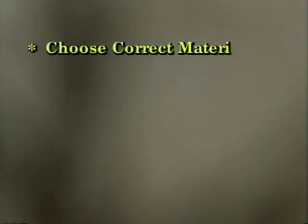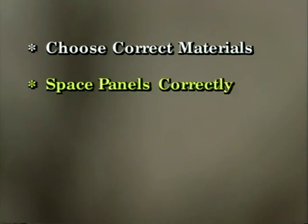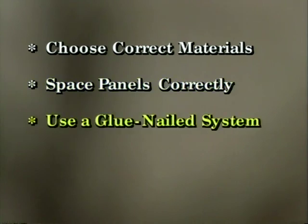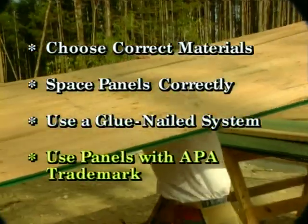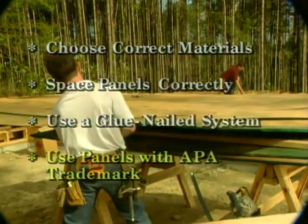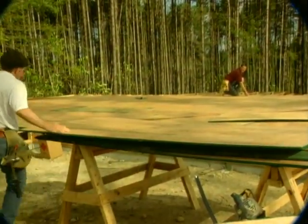In this program we'll show you four simple ways to avoid complaints and callbacks brought on by floor noises. First, always choose the proper building materials. Space floor panels correctly, making sure to leave room for expansion. APA strongly recommends you install a glued floor system with panels nailed and glued to the floor framing, and with all tongue and groove panel edges glued together as well. Use panels with the APA trademark — this is your assurance of high quality.